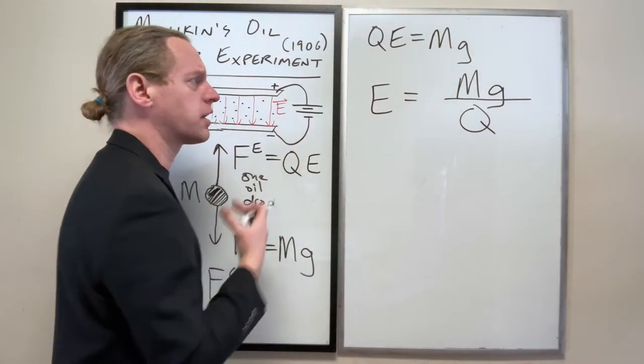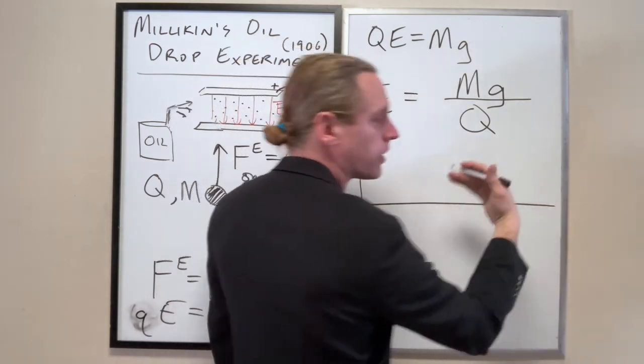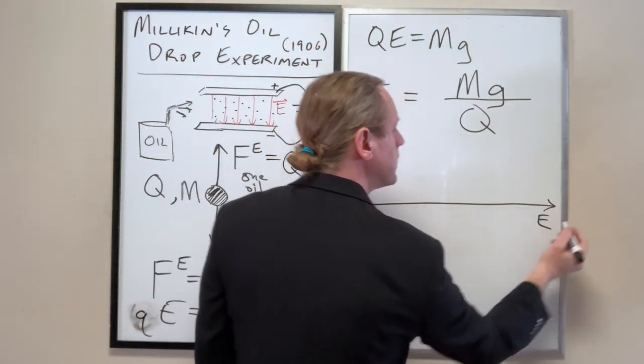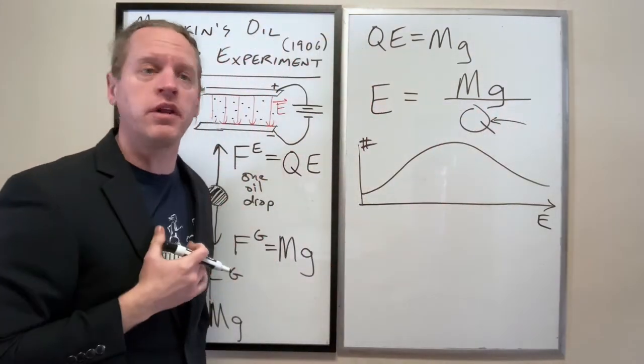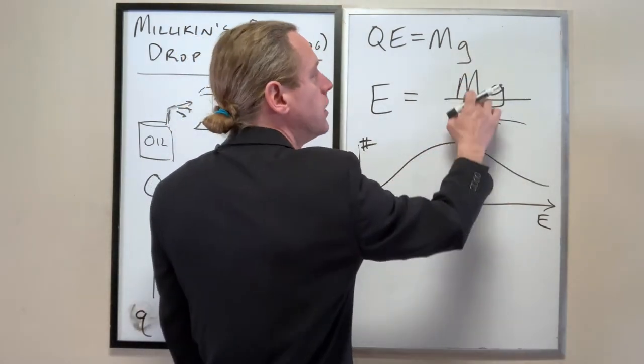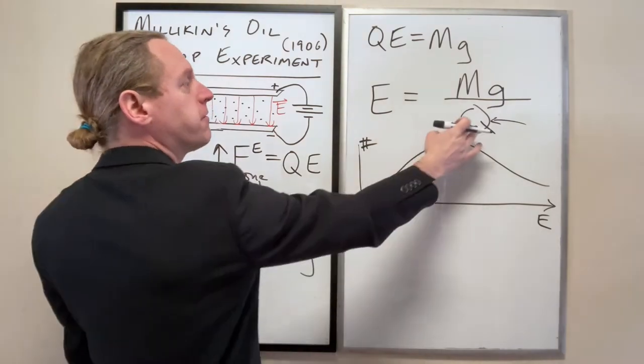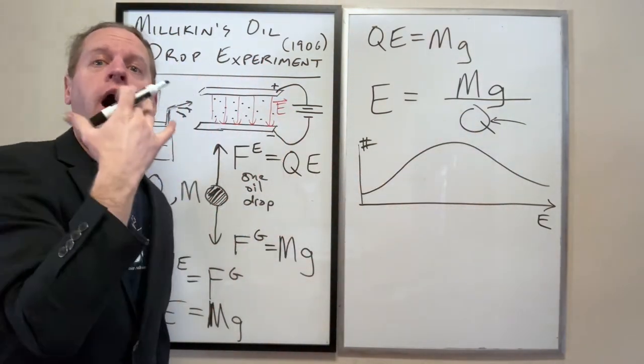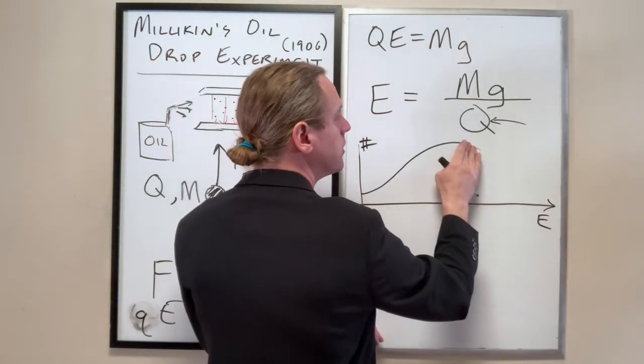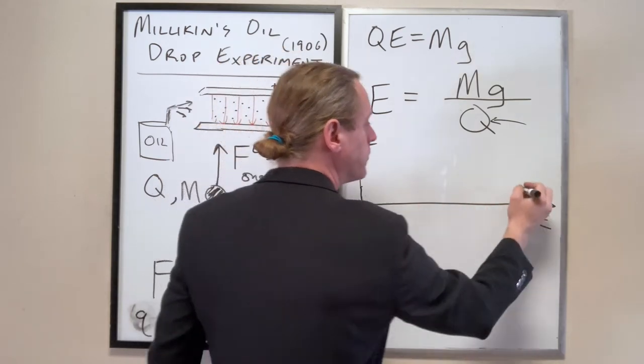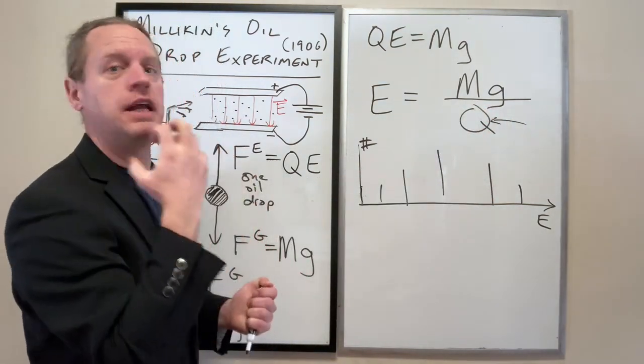And here's where our results start to make a little more physical sense. What we find is that instead of a continuous distribution, so instead of the number of trials that allowed us to hover it versus E, instead of that being like a bell curve like that, which would mean in that case that charge is continuous, is how we would interpret that. Because the only thing in the right hand that changes is Q. We're assuming the mass of the droplets to be very uniform. G is the same. So the only thing that could affect this distribution is the charge. And if Q is continuously distributed, in other words, all values of Q are allowed for the charge of that droplet, then that's what the graph here would look like.